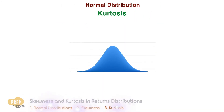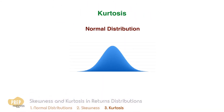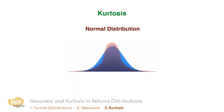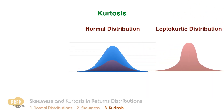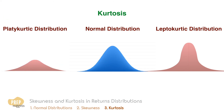Kurtosis is the degree to which a distribution is more or less peaked than a normal distribution. A distribution is leptokurtic when it is more peaked than a normal distribution. A distribution that is less peaked or flatter than a normal distribution is referred to as platykurtic.